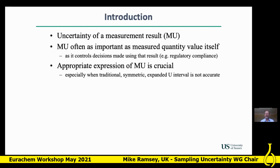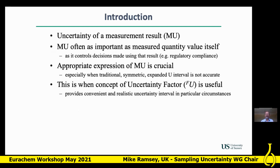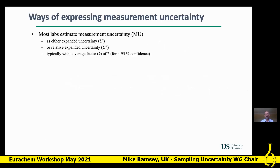Uncertainty of measurement is probably even more important than the measurement quantity value itself because it controls all the decisions you can make with it. We need a good way of expressing measurement uncertainty especially when the traditional symmetric expanded uncertainty interval is not accurate — that's where the uncertainty factor can be useful, and I'm going to explain the circumstances where it works.